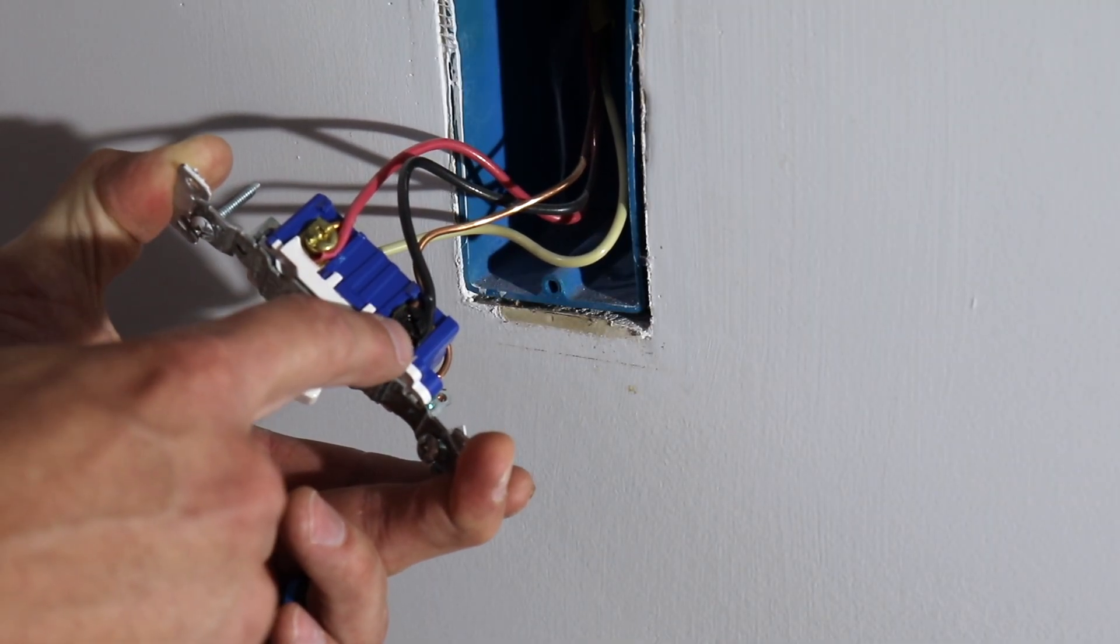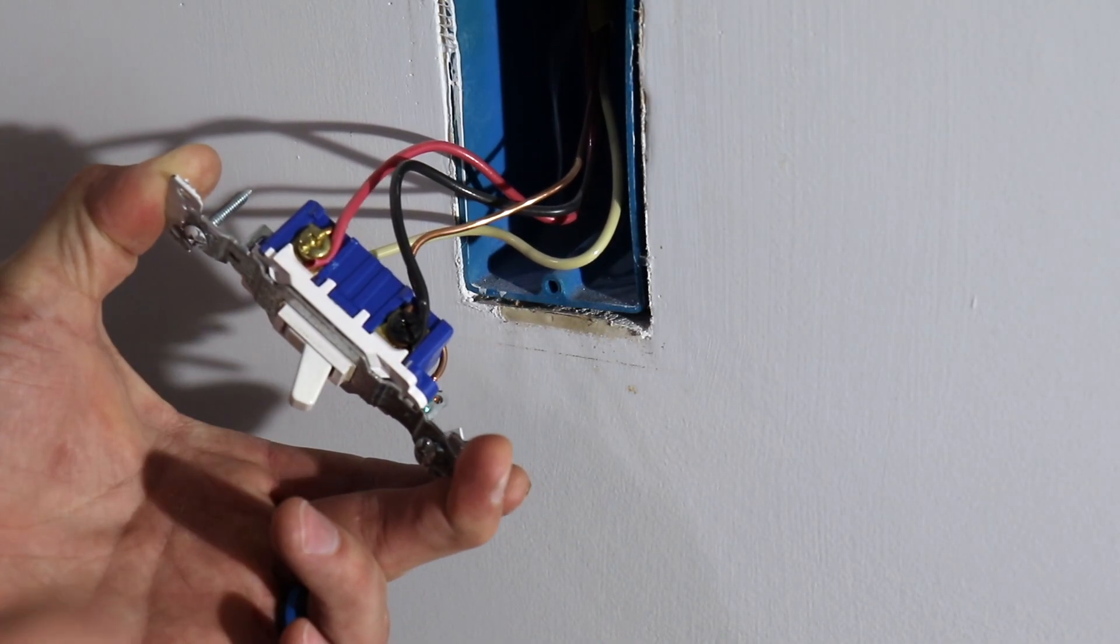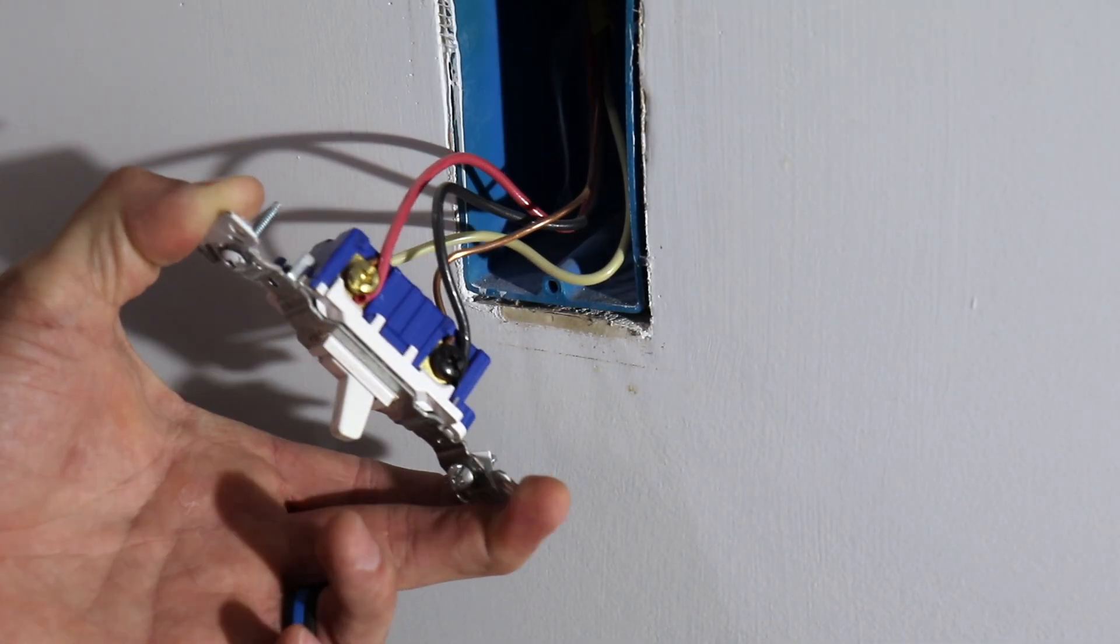So your common terminal is usually a black or a darker colored screw that's on the side of the switch. And in this case, we have a black wire running to our common terminal.